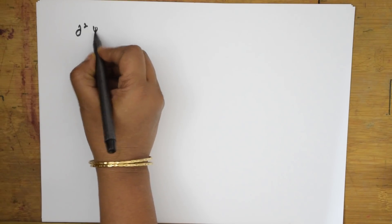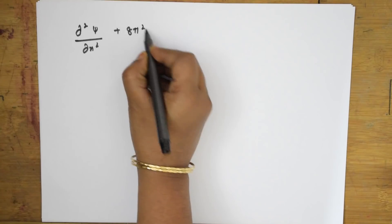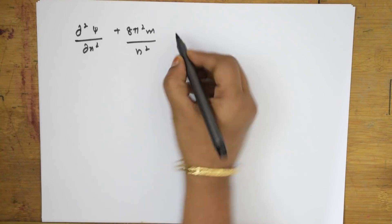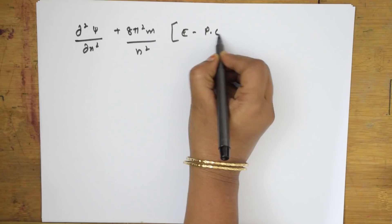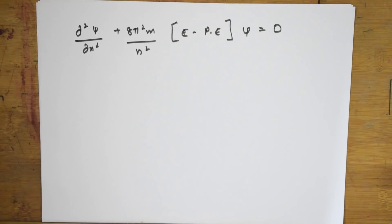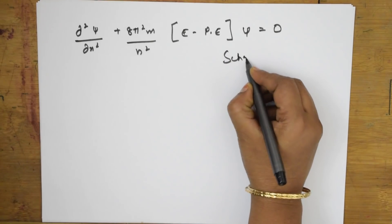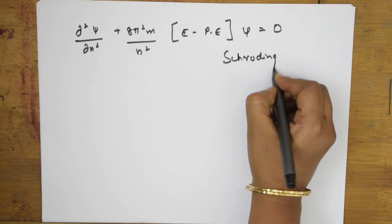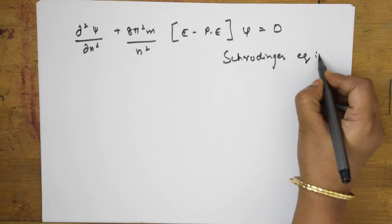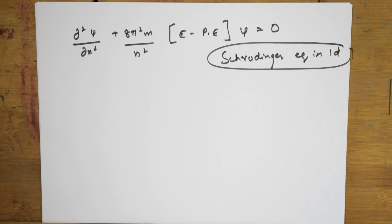This is the Schrödinger wave equation in one dimension (1D): d²ψ/dx² + (8π²m/h²)(E − V)ψ = 0. We have already learned the Cartesian coordinates — x, y, and z axes — so we need to generalize this equation to three space coordinates.